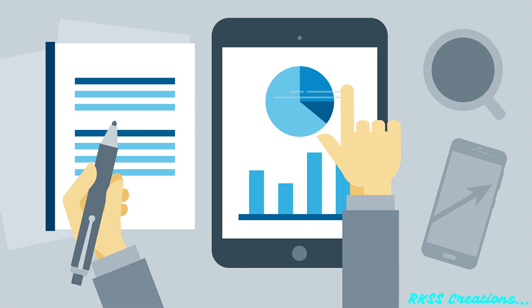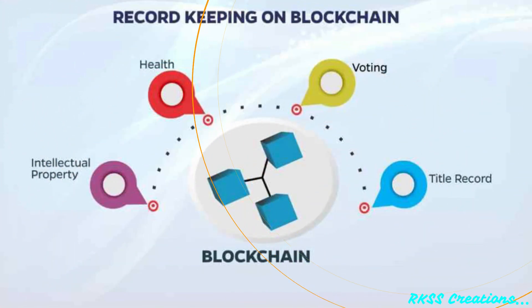it is also riddled with human error, where each inaccuracy makes tracking property ownership less efficient. Blockchain has the potential to eliminate the need for scanning documents and tracking down physical files in a local recording office. If property ownership is stored and verified on the blockchain, owners can trust that the deed is accurate. Blockchain could also be used to facilitate a modern voting system.